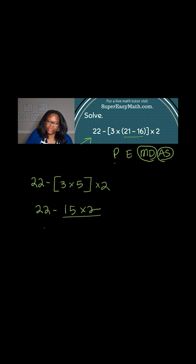Now I'm going to deal with the 15 times 2 portion. I have 22 minus 30, and I'm going to end up with a negative number here, which will be negative 8.